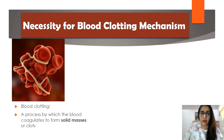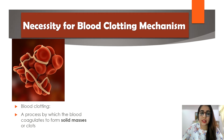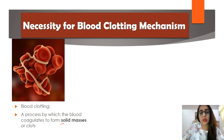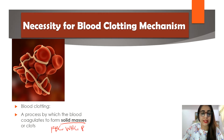Now let's look at the necessity of blood clotting. Blood clotting is a process by which the blood coagulates to form solid masses — like red blood cells, white blood cells, and also platelets — in a fibrin network.